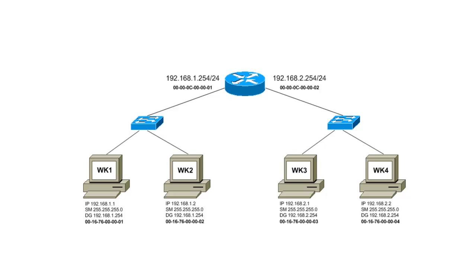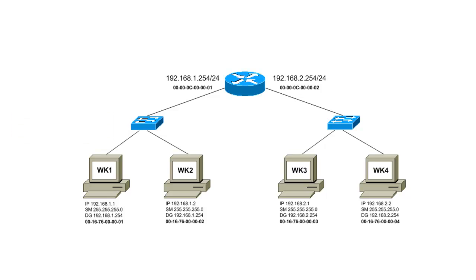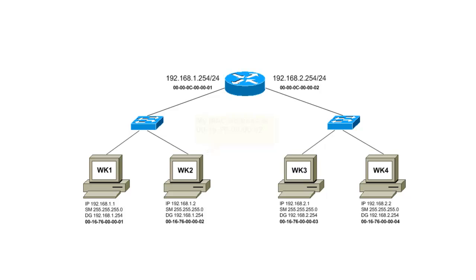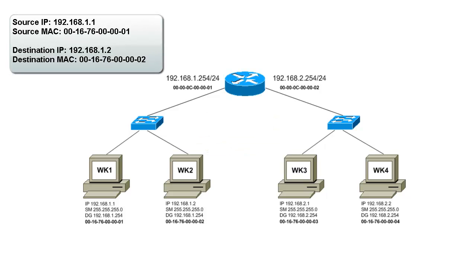The next step is for Workstation 1 to get Workstation 2's MAC address. It will check its ARP cache to see if it already has the answer. If Workstation 1 doesn't have Workstation 2's MAC address, it will send an ARP packet on the network requesting the MAC address for 192.168.1.2. The ARP packet is a broadcast packet — all computers on that subnet will receive the packet. The computer that has the matching IP address will reply back to the requester. Now that Workstation 1 has Workstation 2's MAC address, it simply sends out a packet directly to Workstation 2.